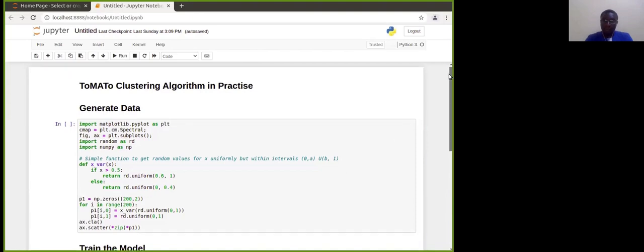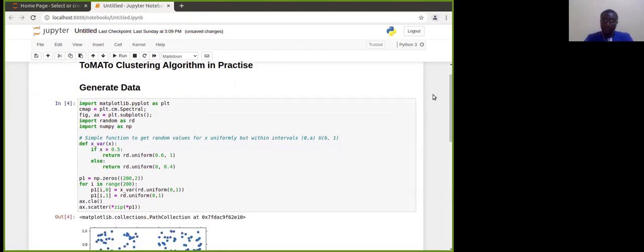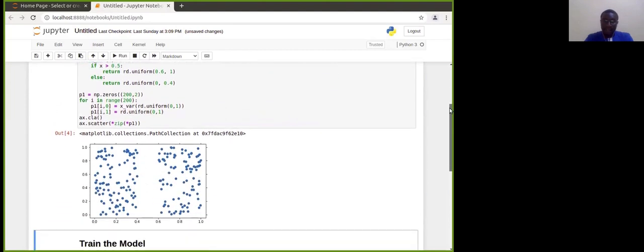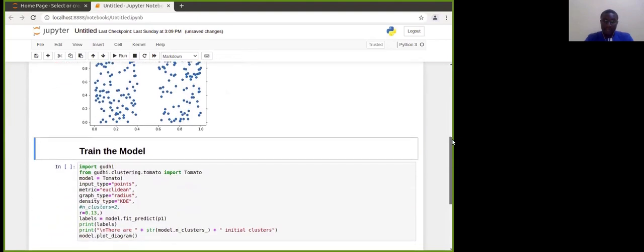So here we are using Jupyter notebook for Python. We start by generating our data. When we see here our data, we can imagine that we have two subgroups. Let us now train the model using TOMETO.